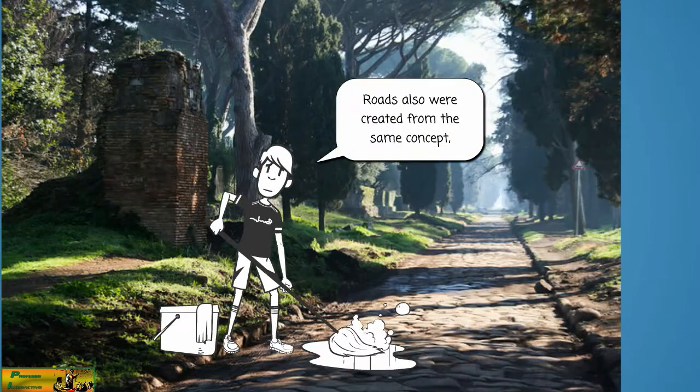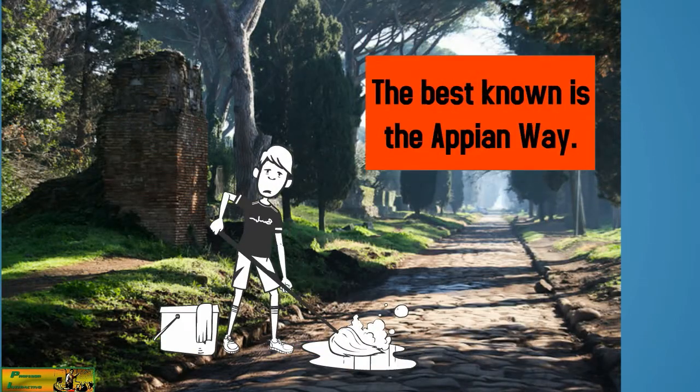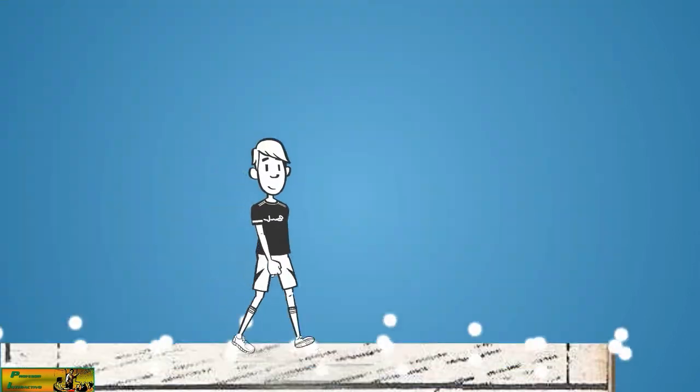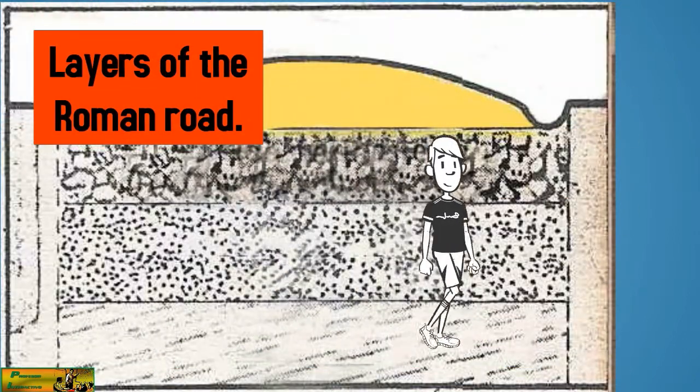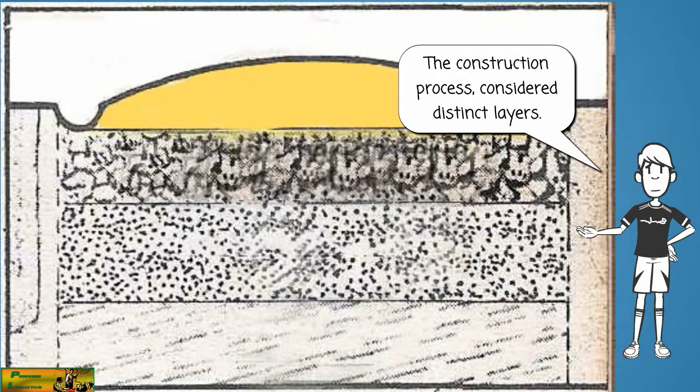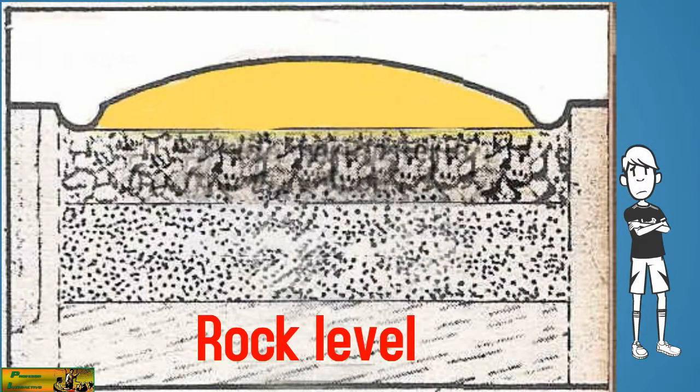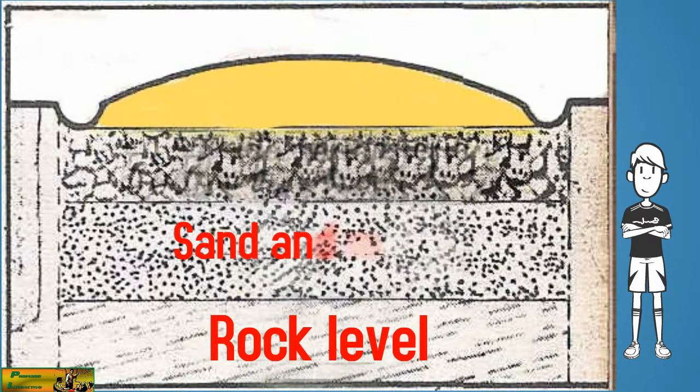Roads also were created from the same concept. The best known is the Appian Way. The construction process considered distinct layers: rob level, sand and mortar.